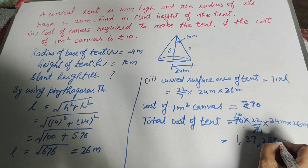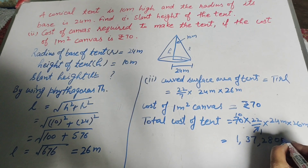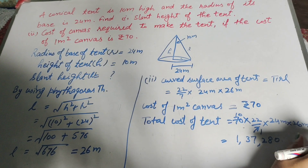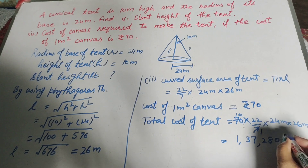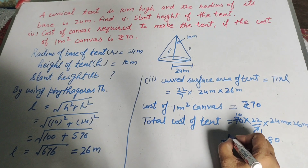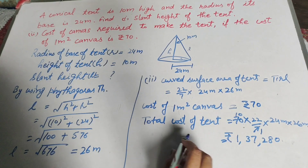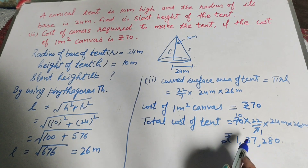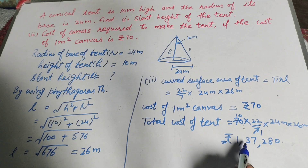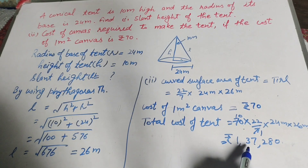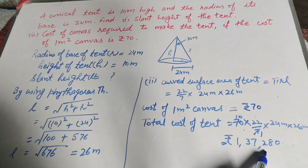We get the answer 1,37,280. So the total cost of canvas required to make the tent is equal to rupees 1,37,280.